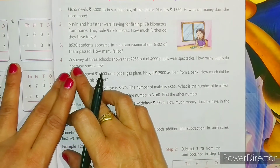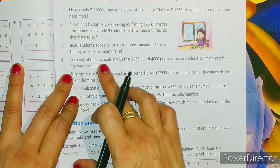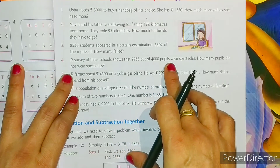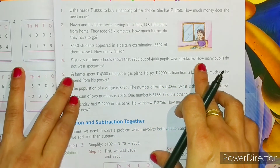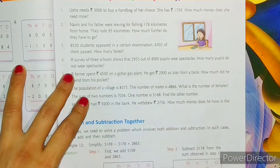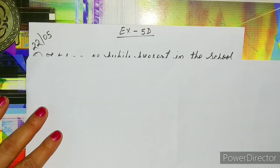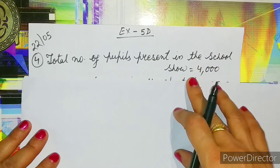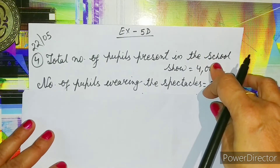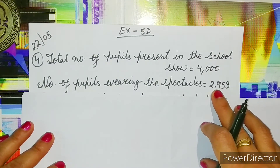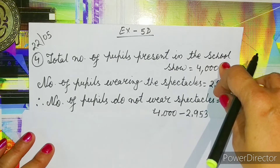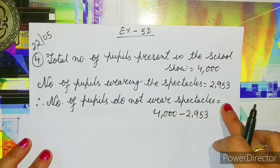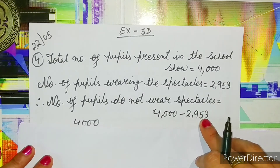Now let's move on to question number four. A survey of three schools shows that 2953 out of 4000 pupils wear spectacles. How many pupils do not wear spectacles? Let us solve question number four. The first statement: number of pupils in the school is equal to 4000. The second statement: number of pupils wearing spectacles is equal to 2953. Therefore, the number of pupils who do not wear spectacles is equal to 4000 minus 2953.